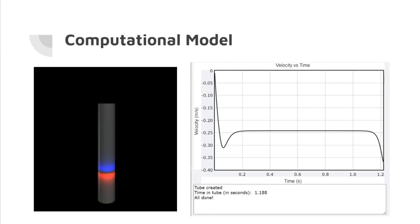Here are the images from my computational model. The magnitude of velocity of the magnet increases before settling just below 0.25 meters per second for around one second total. The total time was 1.19 seconds, which is just below the actual time from my real-life experiment, which was 1.24 seconds.